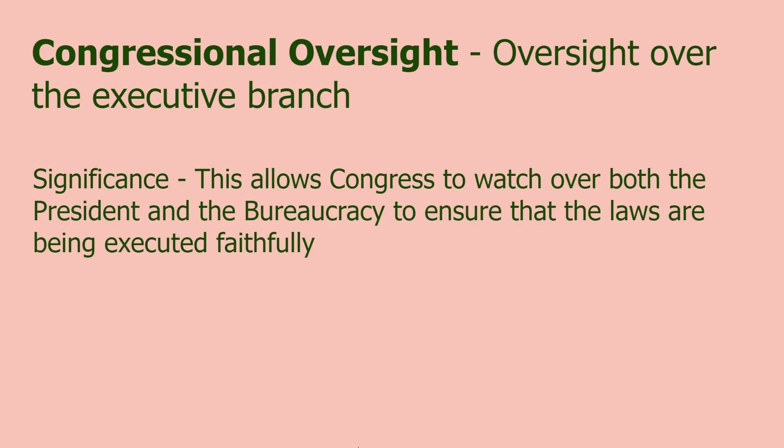Congressional oversight: oversight over the executive branch. This allows Congress to watch over both the president and the bureaucracy to ensure that laws are being executed faithfully. One piece of congressional oversight that gets into the public eye is when Congress holds hearings and people from big corporations, the bureaucracy, or higher positions in the executive branch stand before Congress to answer questions on certain activities and failures. This is a checking power the legislative branch has against the executive.